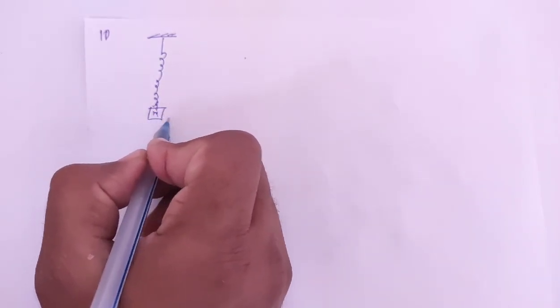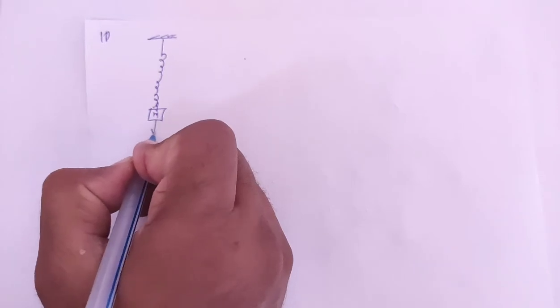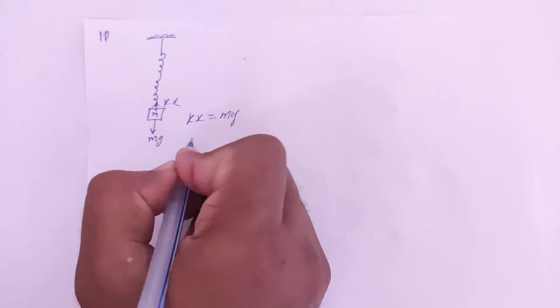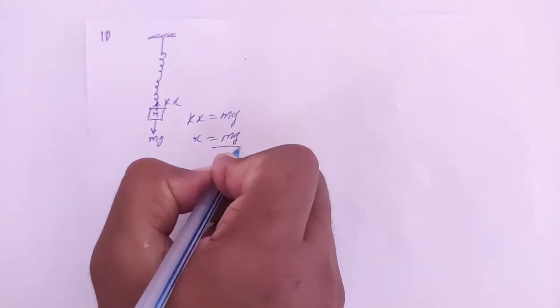So look, first if I talk about extension, there's force mg acting downward and force kx acting upward. So kx equals mg, therefore x equals mg by k.